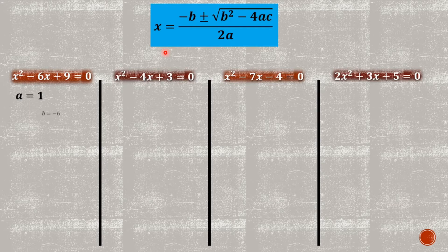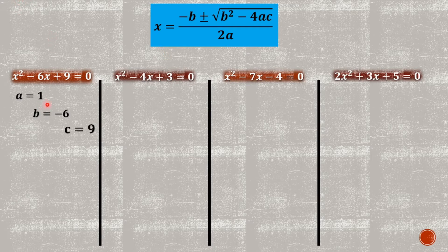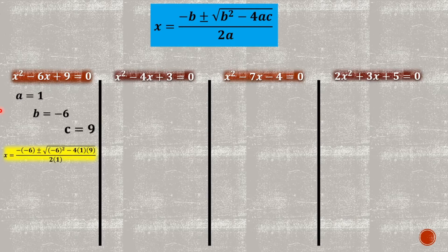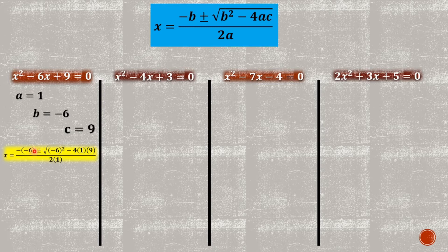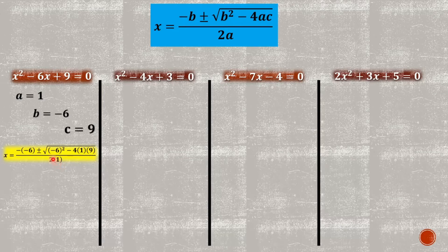Let us proceed to number one. First step, we need to identify the value of A, B, and C. The value of A, B, and C in example number one is one, negative six, and nine. Second step, we need to substitute those values into the quadratic formula: negative six plus or minus square root of negative six squared minus four times one times nine, all over two times one.